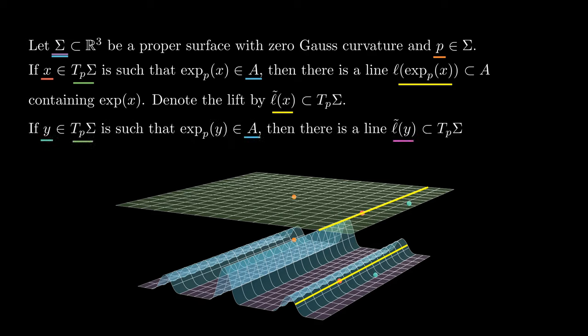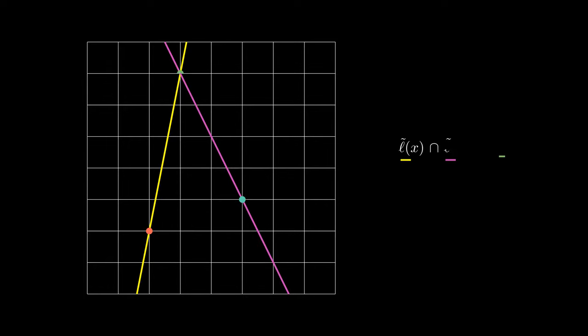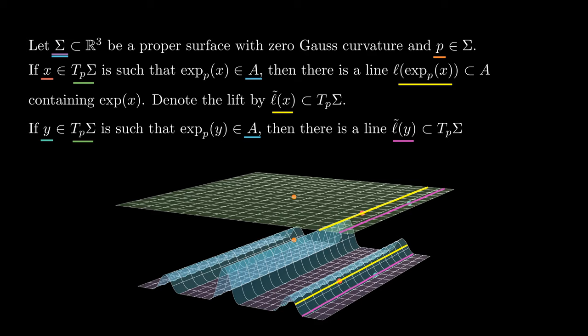If we do the same with another point y in Tp sigma with exp(y) in A, we get another line L tilde of y in Tp sigma passing through y. Notice that these lines are parallel, because if not, they would intersect at a point z, and then when we take exp of z, it will be a point in A with two distinct lines passing through it, but that was ruled out by the uniqueness of the first lemma. This shows that in Tp sigma, the preimage of A is a union of parallel lines that get sent via the exponential map to lines in three-dimensional space.